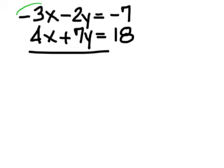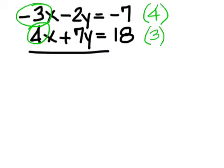So to get a 12 up here in this position, I have to multiply the negative 3 by 4. And down on the bottom, to get a 12 in this position, I have to multiply 4 by 3. But what you do to one thing in the equation, you have to do to all of it.